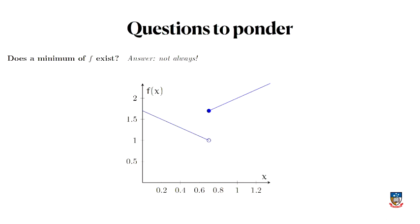Even trickier: even though a function is bounded between 0 and 1.2, it might still not have a minimum. If the function never goes below 1 in the y-direction but the value 1 is never actually reached — because the closer you get to some point from the left, the closer you approach 1 without touching it, since that point isn't in the domain — then any number you claim is the minimum can be beaten. You can bound it below, but it doesn't have a minimum.